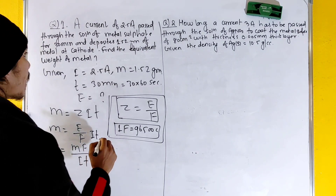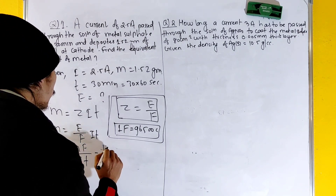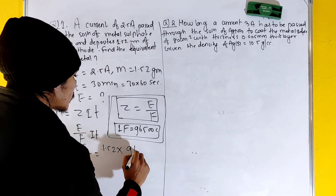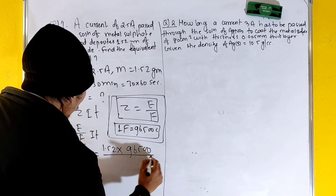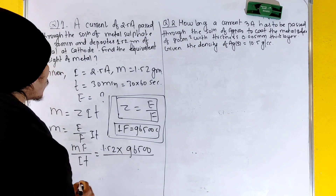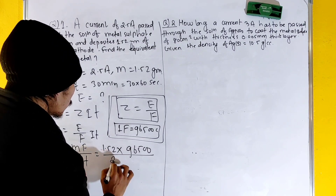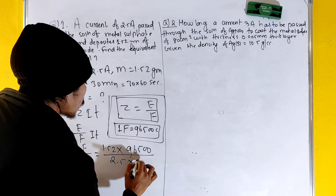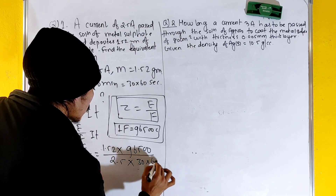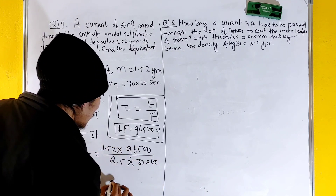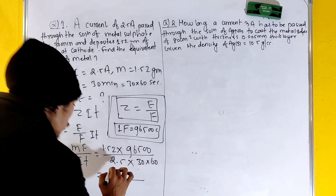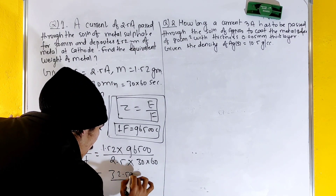Now substituting the values: m is equal to 1.52, F is equal to 96500, i is equal to 2.5, and t is equal to 30 into 60. Solving this gives e equal to approximately 36.